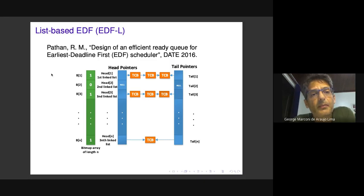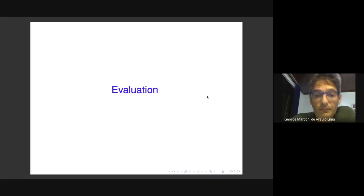The second implementation is the one Pathan described in a paper at DATE 2016. The priority queue is structured as a set of lists, with one list for each task in the system. There is also a bitmap vector that identifies which list to search when looking for tasks. Details can be seen in the DATE paper, and we'll skip that for the sake of time.